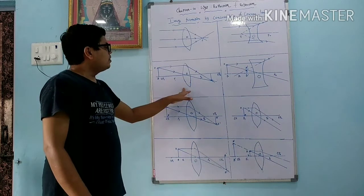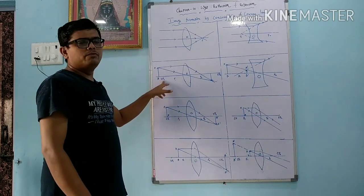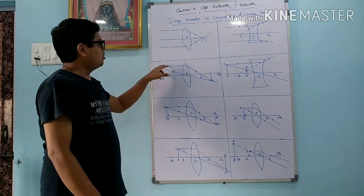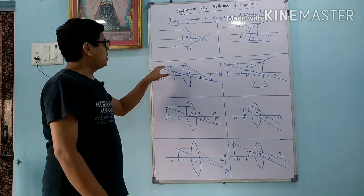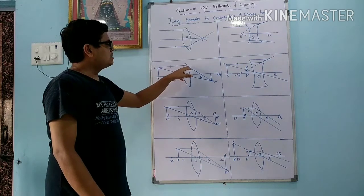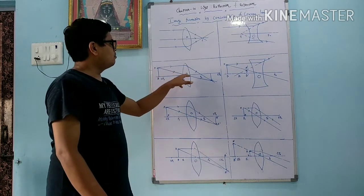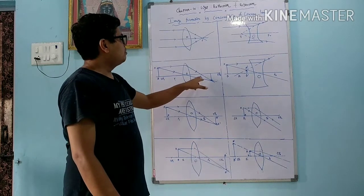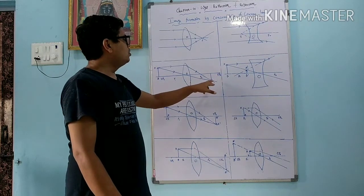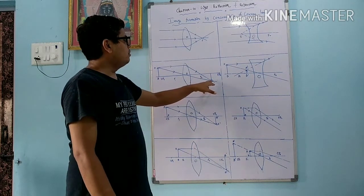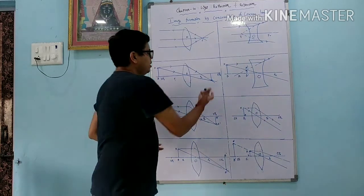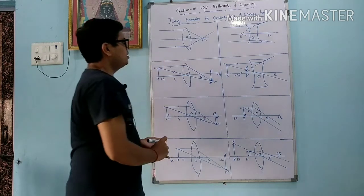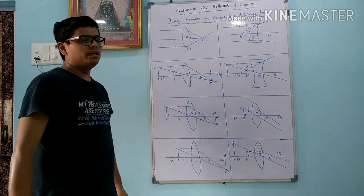Second case: we put the object beyond 2f1. Two rays are passed — one ray is parallel to the principal axis, another ray passes from the optical center. The first ray passes from f2 and the second ray passes from the optical center. They are both convergent rays, so they meet between f2 and 2f2. We get a real and inverted image, and the size of the image is smaller than the object, obtained on the other side of the lens.